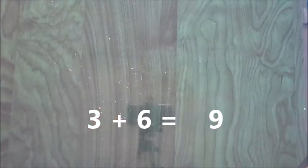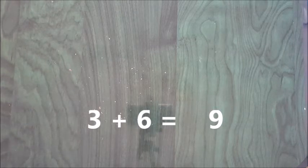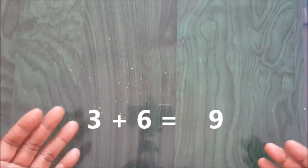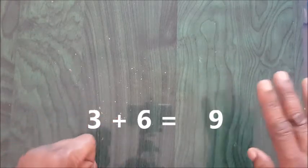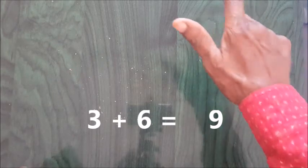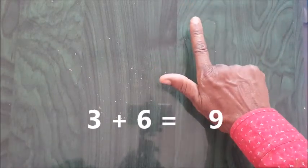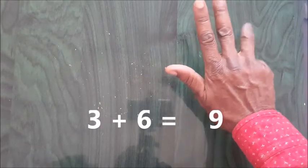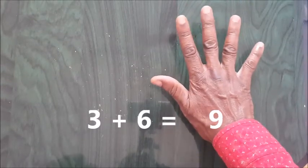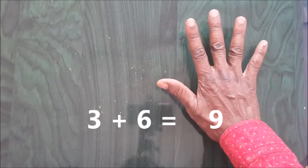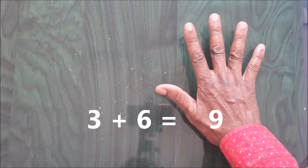Now let's watch out. 3 plus 6. Since 6 is the bigger or larger number, we will count on the 6 first. So this is 5, 6. We have 6. 6 plus 3. 1, 2, 3. That is 9. When you shoot up all the fingers, you have 9.